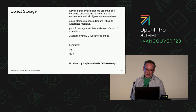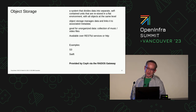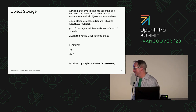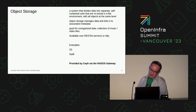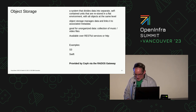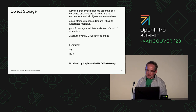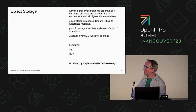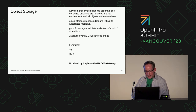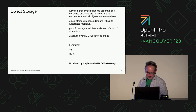Object storage, on the other hand: a system that divides data into separate self-contained units that are stored in a flat environment, with all objects on the same level. That's the opposite of a file system — everything is stored flat, all in one big place, with an identifier given so that data can be retrieved later. Good uses of object storage are for things like collections of music files, video files, and unorganized data. They're available over RESTful services or HTTP. Object storage has certainly been around for a while thanks to S3 and Swift. In Ceph, that service is provided by the Rados Gateway.